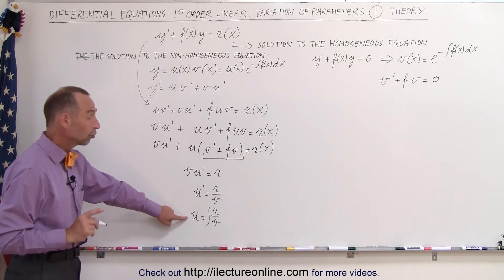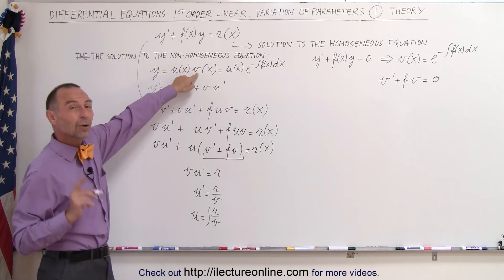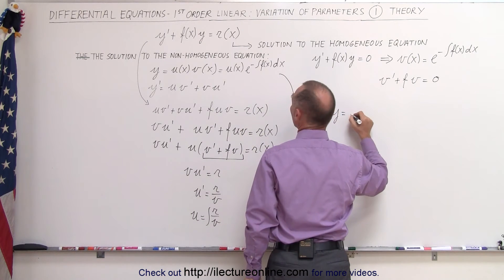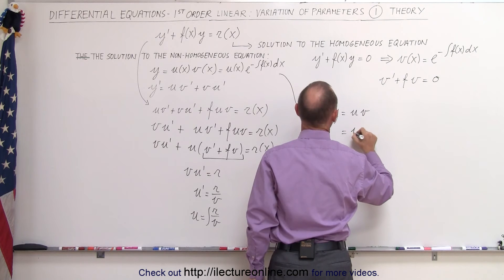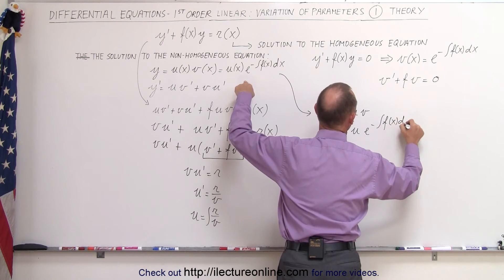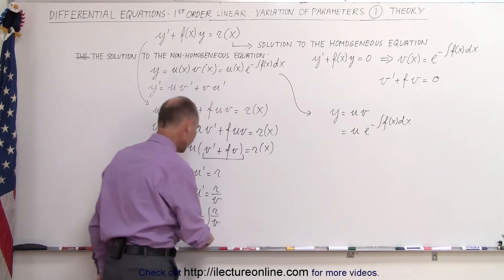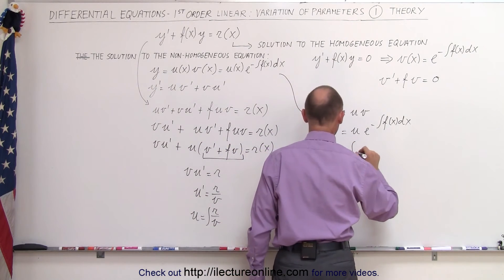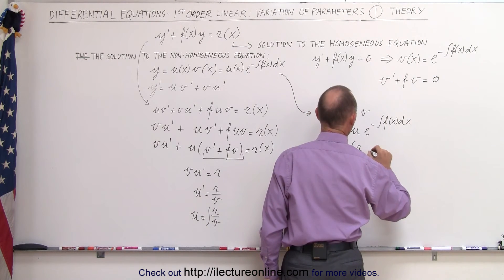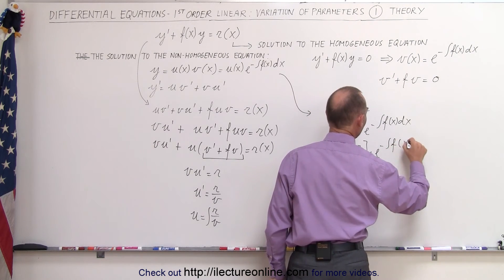Now I have a solution for u. I can plug that into my equation. I have a solution for v, which means the solution y equals u times v, which equals u times e to the minus integral of f of x dx. This can now be written as the integral of r divided by v, multiplied by e to the minus integral of f of x dx.